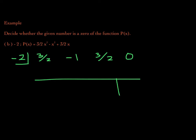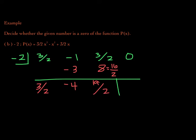Bring down 3/2. Then negative 2 times 3/2 is negative 3, so I'll put negative 3 here. Negative 1 plus negative 3 is negative 4. Negative 2 times negative 4 is positive 8. Then 3/2 plus 8 — remember that 8 is really 16/2, so 3/2 plus 16/2 gives you 19/2. Negative 2 times 19/2 is negative 19. So the remainder is negative 19.